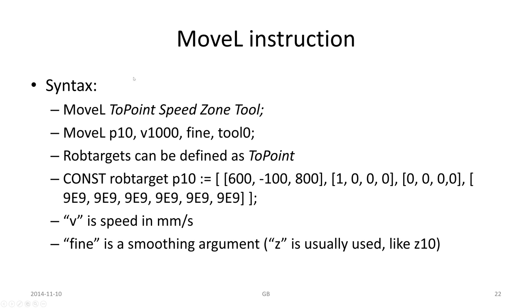MoveL is an extremely common instruction — that is the move linear. It moves to a certain point with a certain speed and a zone, which tells how close it will move to that point, and a certain tool. So: MoveL, the point is P10, the velocity is 1000 mm per second, for tool zero. Fine means a full stop. These are defined as a constant — robtarget P10 equals, and so on, a lot of data. V is speed in mm per second.